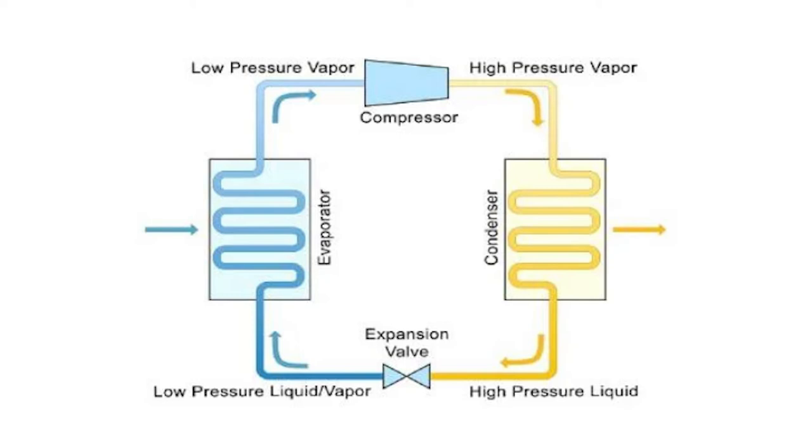For the evaporator to absorb the heat from the area being cooled, the refrigerant liquid entering it needs to be at a very low temperature, for the difference to be sufficient for the heat exchange. This is done by lowering the pressure of the refrigerant entering the evaporator, thereby lowering its temperature too, and the metering device serves this purpose. The two most commonly used metering devices are the capillary tube and expansion valve.